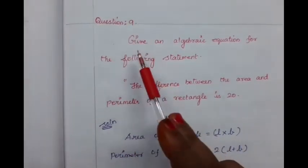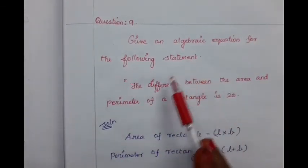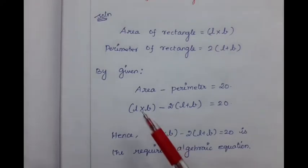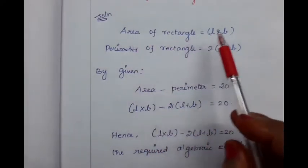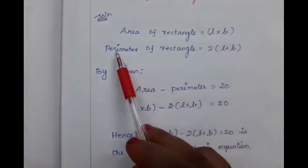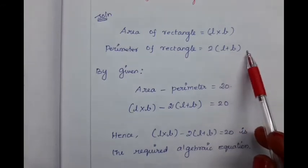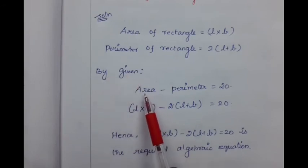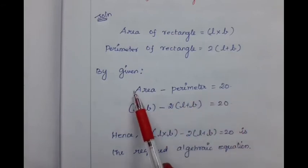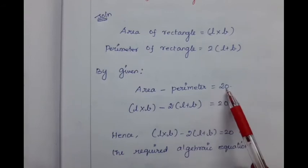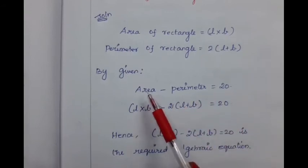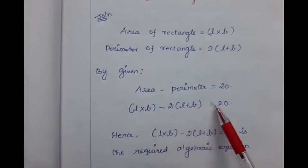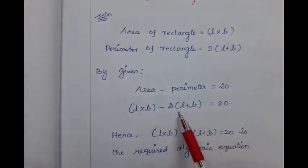Next, question number 9: Give an algebraic equation for the following statement — the difference between the area and the perimeter of a rectangle is 20. We know that the area of a rectangle is L into B square units, and the perimeter is 2 into (L plus B) units. By given in the question, area minus perimeter equals 20, which gives L into B minus 2 into (L plus B) equals 20. This is the required algebraic expression.